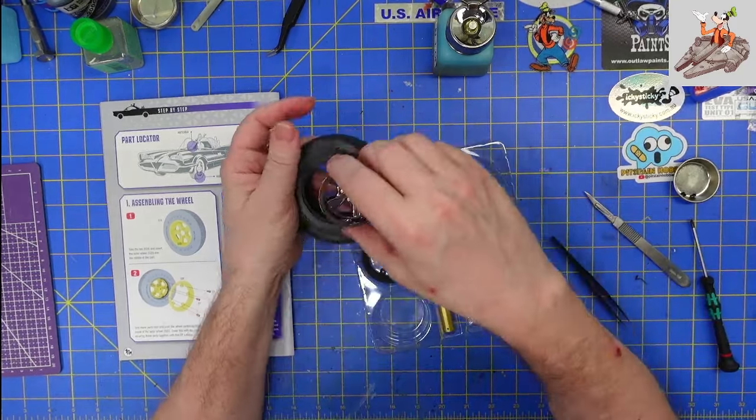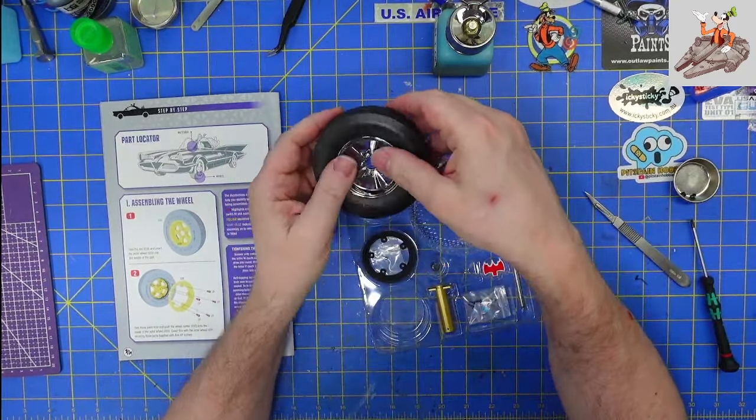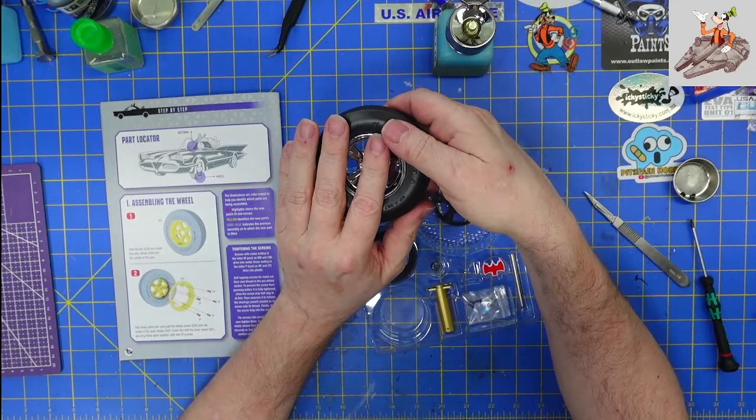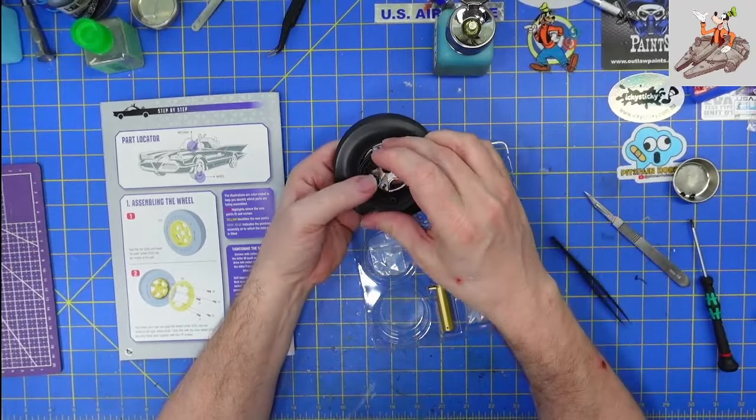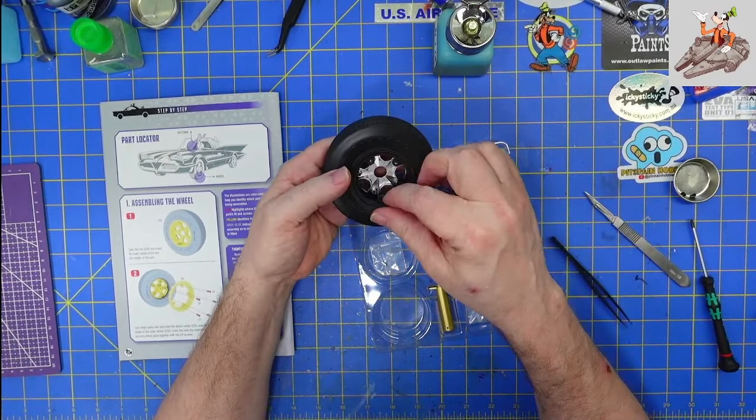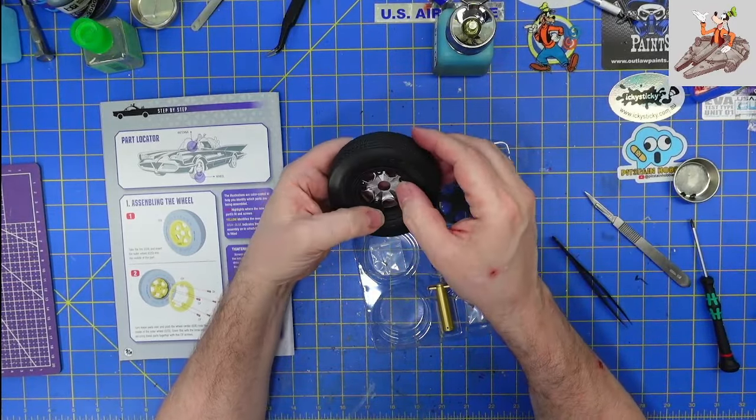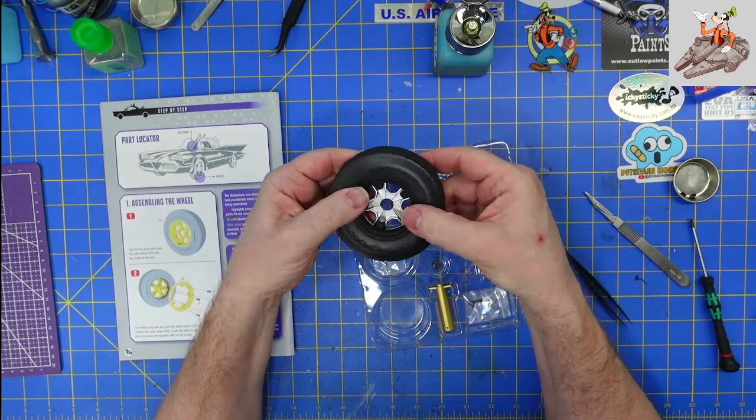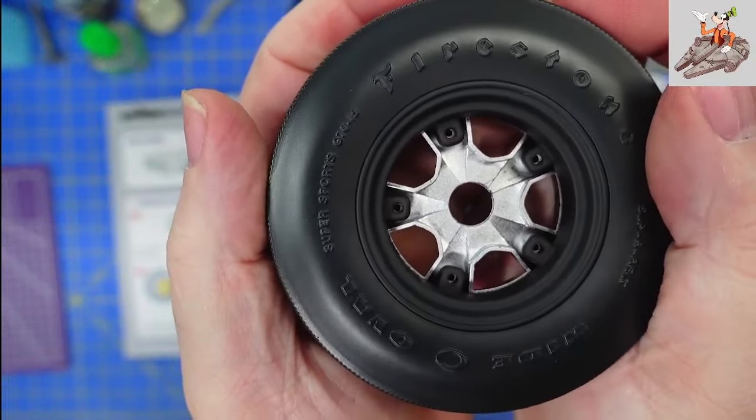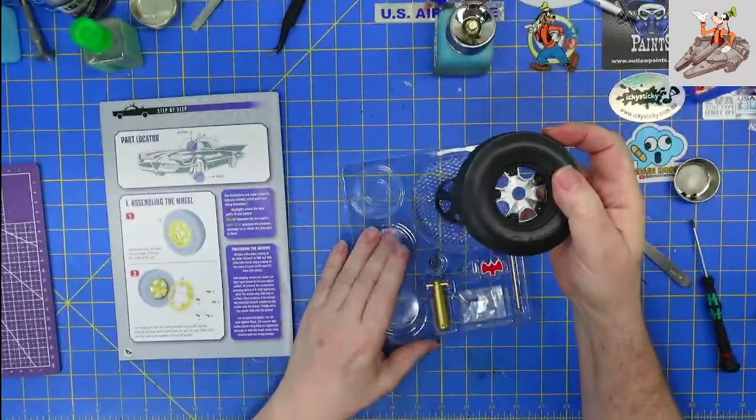Chrome is just your regular plastic. So you put that in there. And then you turn it over. You put this, which is also a metal piece, in here, lining up the screws or the screw holes with the chrome piece.